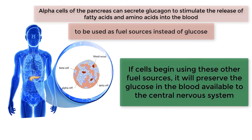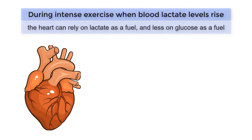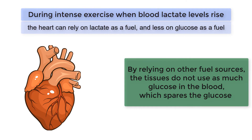If cells begin using these other fuel sources, it will preserve the glucose in the blood available to the central nervous system. Additionally, during intense exercise when blood lactate levels rise, the heart can rely on lactate as a fuel and less on glucose. By relying on other fuel sources, the tissues do not use as much glucose in the blood, which spares the glucose — and is why the process is referred to as glucose sparing.